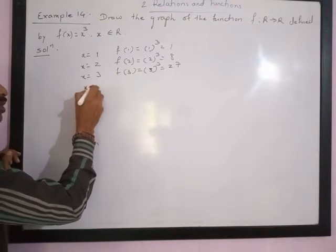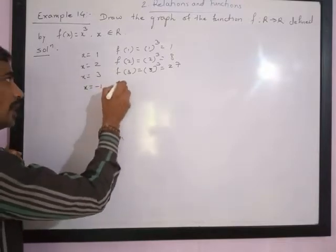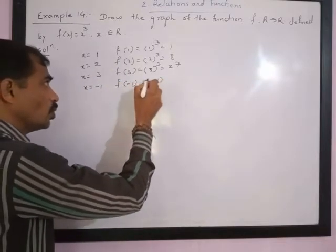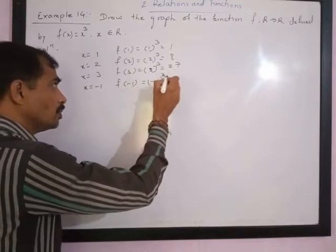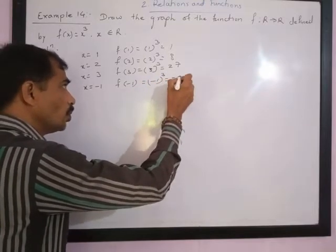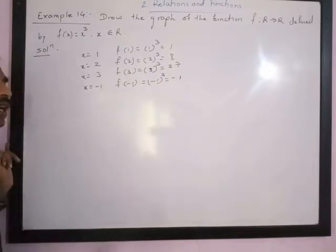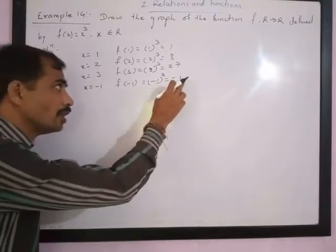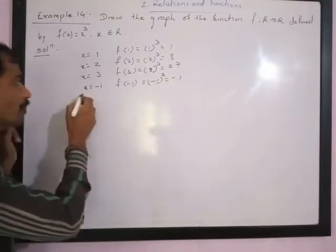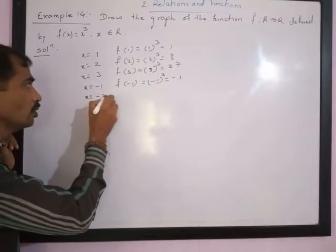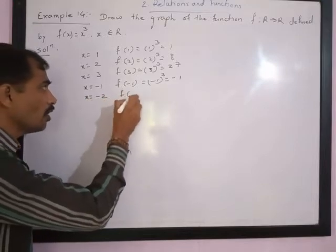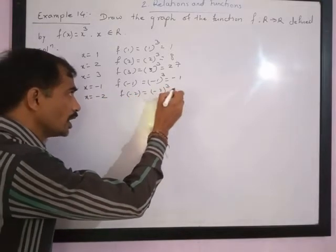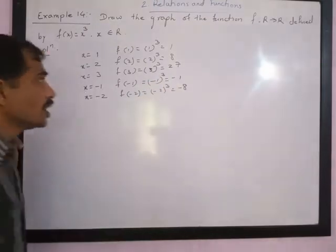If you take x equal to minus 1, we get f(-1) = (-1) cube = negative 1. Please understand: this is minus 1 times minus 1 times minus 1, three times, so it will be negative 1. If x equals negative 2, f(-2) = (-2) cube = negative 8.